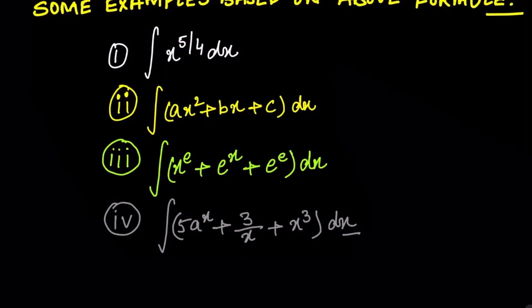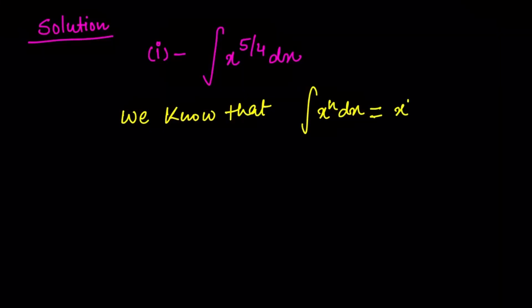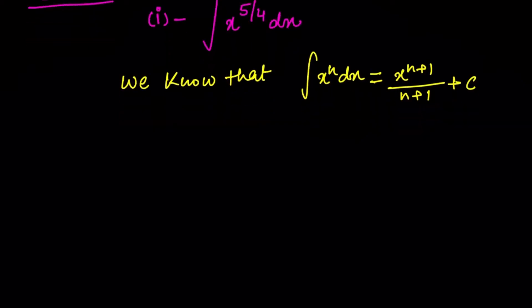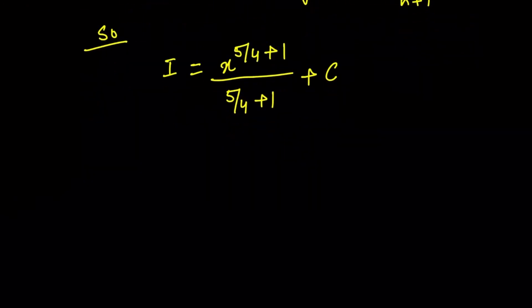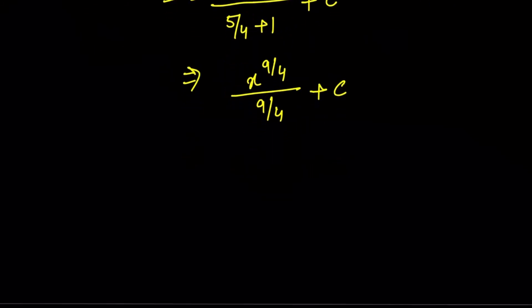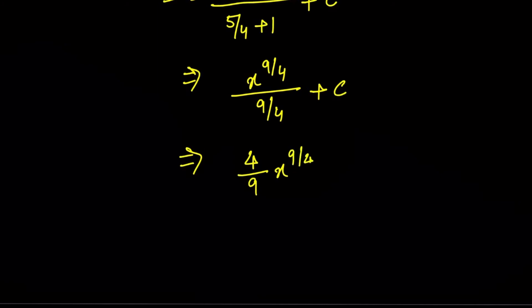Now we can see some examples based on these formulae. The first example is: ∫x^(5/4) dx. We use the x^n formula: ∫x^n dx = x^(n+1)/(n+1) + C. Applying this formula, we get x^(5/4 + 1) / (5/4 + 1) + C = x^(9/4) / (9/4) + C. So the final result is (4/9)·x^(9/4) + C.